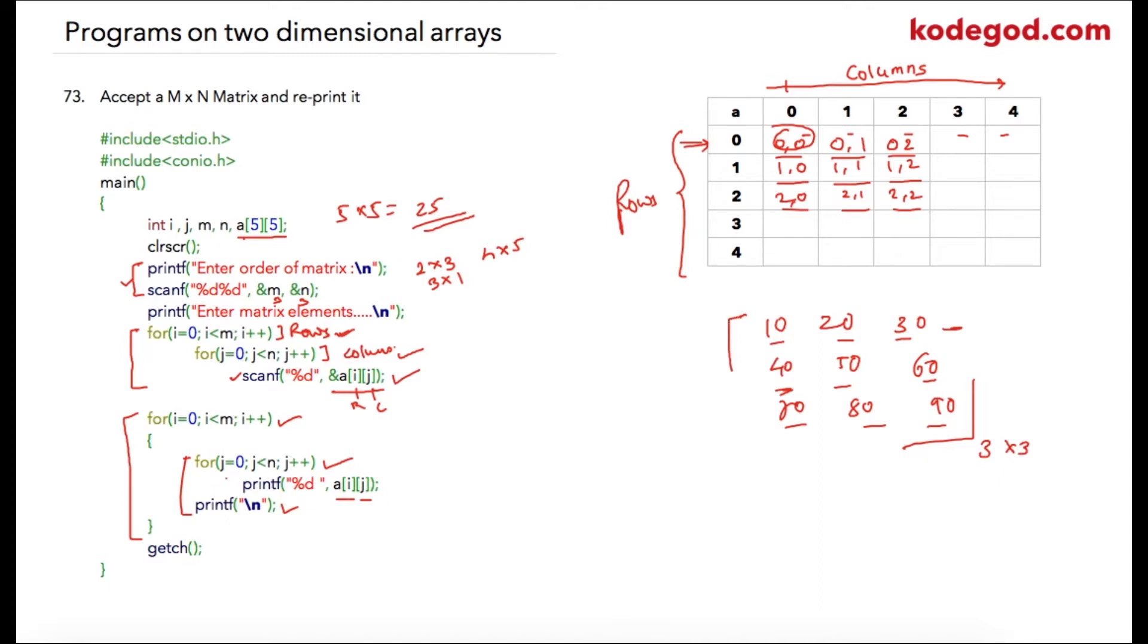Important thing to notice here is that when asking values from the user, we are using ampersand a of i j, and at the time of printing we are using simply a of i j.